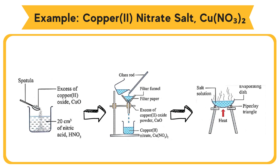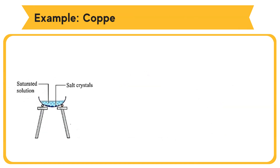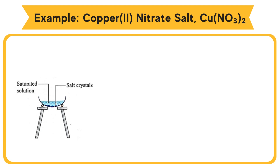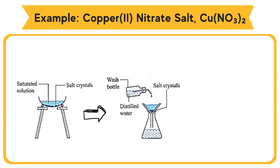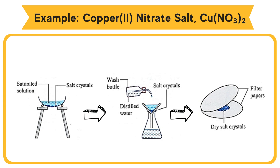Pour the filtrate into an evaporating dish and heat the filtrate until a saturated salt solution is obtained. Let the saturated solution cool until blue crystals of copper(II) nitrate are formed. Filter the contents of the evaporating dish to obtain the salt crystals. Rinse the crystals with a little amount of distilled water. Dry the salt crystals by pressing them between two pieces of filter papers.